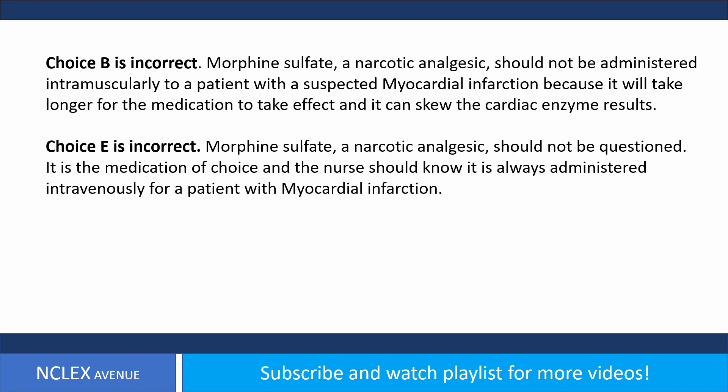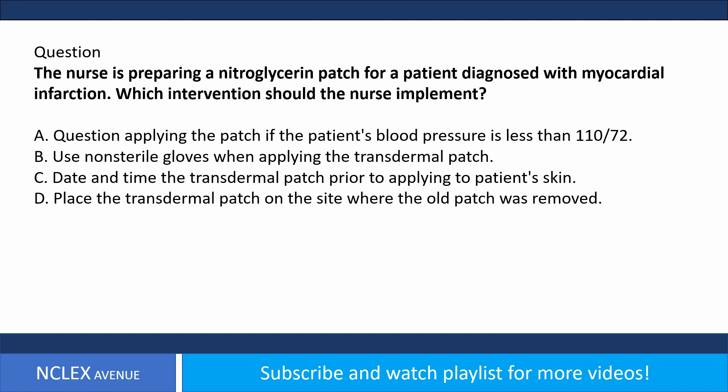Question. The nurse is preparing a nitroglycerin patch for a patient diagnosed with myocardial infarction. Which intervention should the nurse implement? A. Apply the patch if the patient's blood pressure is less than 110/70. B. Use non-sterile gloves when applying the transdermal patch. C. Date and time the transdermal patch prior to applying to patient's skin. D. Place the transdermal patch on the site where the old patch was removed.